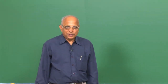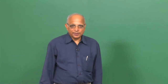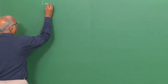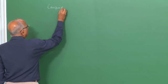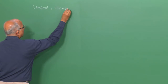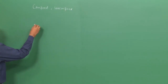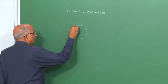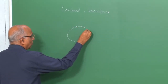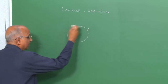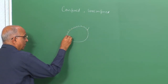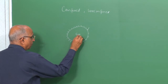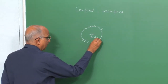Good morning. In today's class we will look at explosions in confined and unconfined geometries. When we say confined, the boundary of the explosive gas mixture does not allow the gas to mix with the surroundings — the boundary is impervious. The boundary could be fixed or it could move, but it isolates the gas mixture and the explosion from the surroundings.